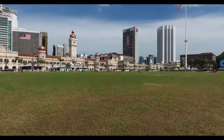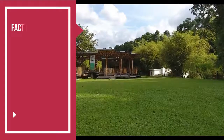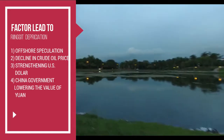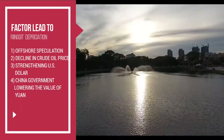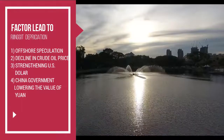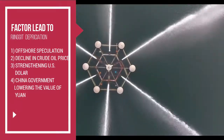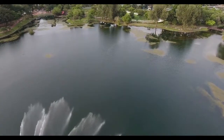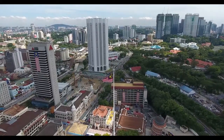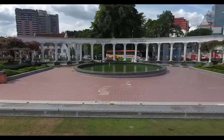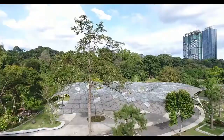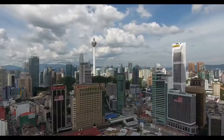In conclusion, there are a variety of causes that lead to the depreciation of the Malaysian Ringgit — offshore speculation, the decline in commodity prices such as crude oil, the strengthening of the US currency, and the actions of the Chinese government in lowering the Yuan. The fall in the Ringgit has a fairly significant impact on Malaysia's trade. On the positive side, the downfall of the Ringgit can be seen as a boost, as it increases Malaysia's total exports and the number of tourist arrivals, bringing hope for better economic growth in the future.